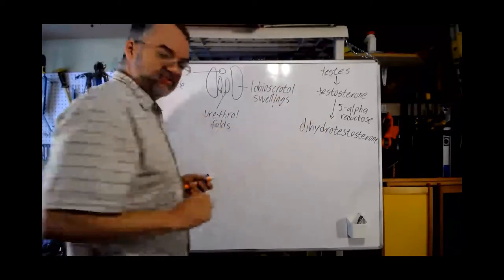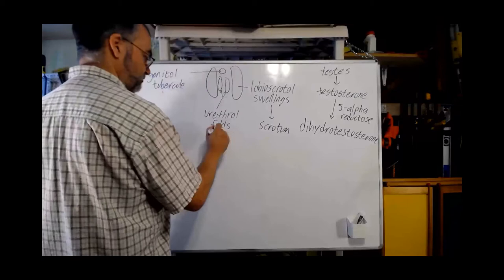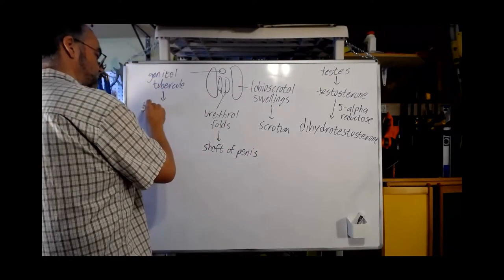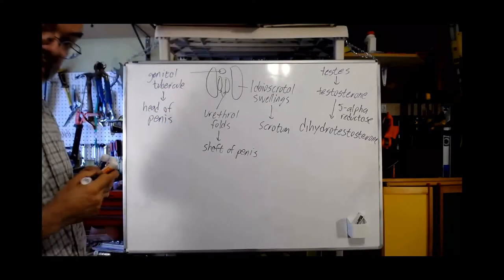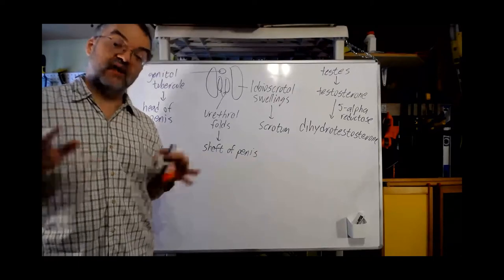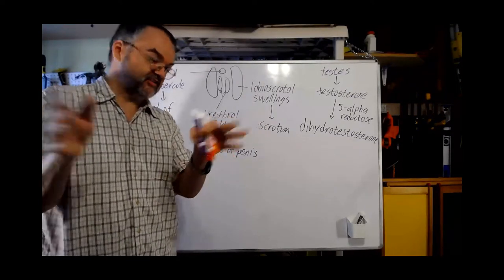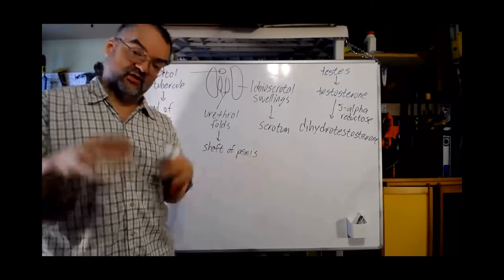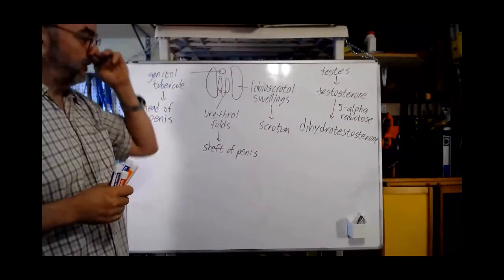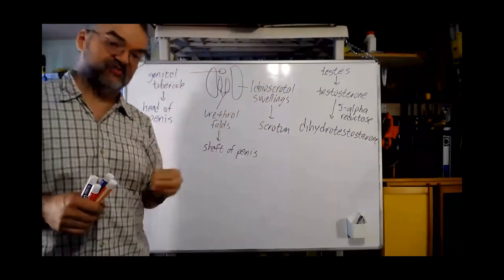In the presence of dihydrotestosterone, the labioscrotal swellings become the scrotum, the urethral folds become the shaft of the penis, and the genital tubercle becomes the head of the penis. This is why we talk about external genitalia between the typical female and typical male versions as being homologous — they came from the same original structures. The same structure becomes either the clitoris or the head of the penis; the same structure becomes either the scrotum or the labia majora.